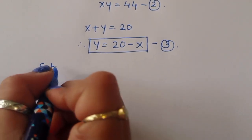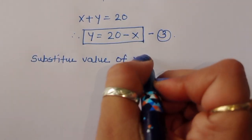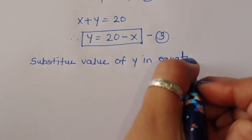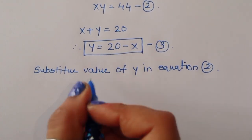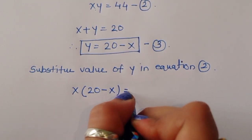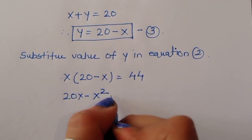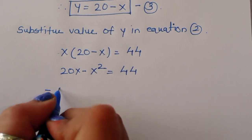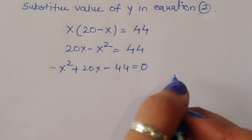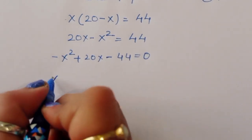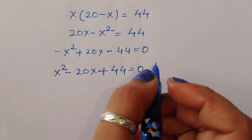Now substitute the value of y into equation 2. So in equation 2, x times y equals 44, we replace y with 20 minus x, giving x times (20 minus x) equals 44. Expanding: 20x minus x squared equals 44. Rearranging: minus x squared plus 20x minus 44 equals 0. Multiplying both sides by minus 1 gives x squared minus 20x plus 44 equals 0.